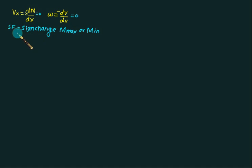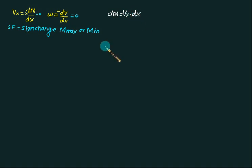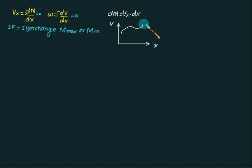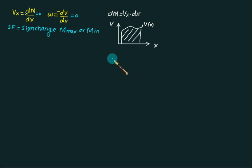If we take the first equation and separate variables, we get dM equal to V(x) multiplied by dx. If we draw the shear force on the y-axis and apply the concept of area under the diagram — where shear force V is a function f(x) — then the area under this diagram represents the change in bending moment. Area under shear force diagram equals change in bending moment.